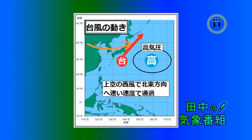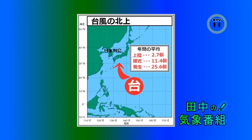台風は上空の風に流されて動き、また地球の自転の影響で北へ向かう性質を持っています。そのため、通常東風が吹いている低緯度では台風は西へ流されながら次第に北上し、上空で強い西風が吹いている中緯度・高緯度に来ると、台風は速い速度で北東へ進みます。この時に、太平洋にある高気圧によっても進路が左右されます。年間の平均で、上陸が2.7個、接近が11.4個、発生は25.6個となっています。